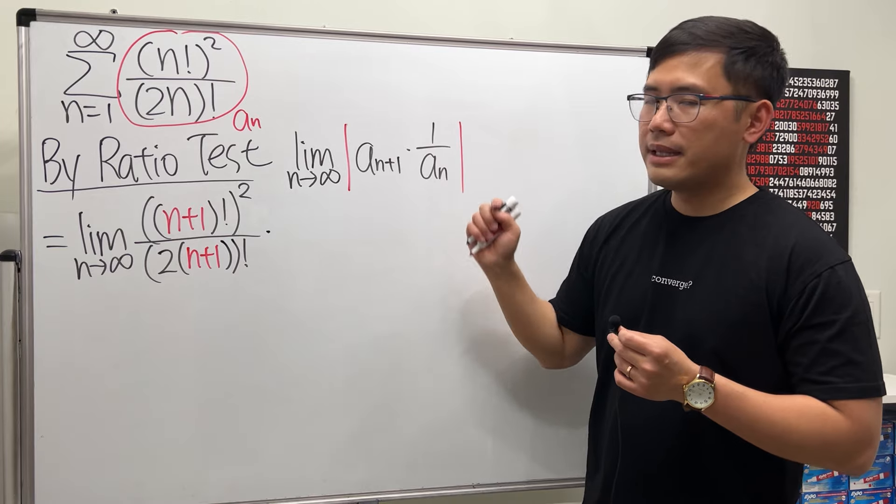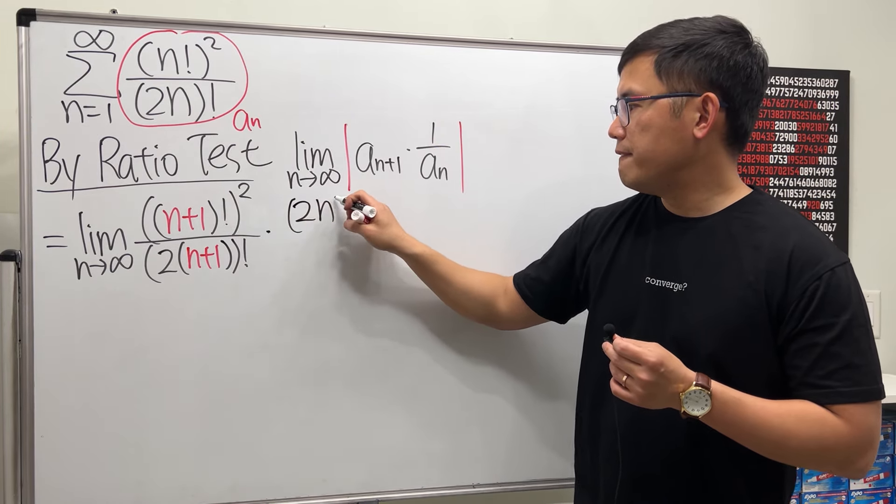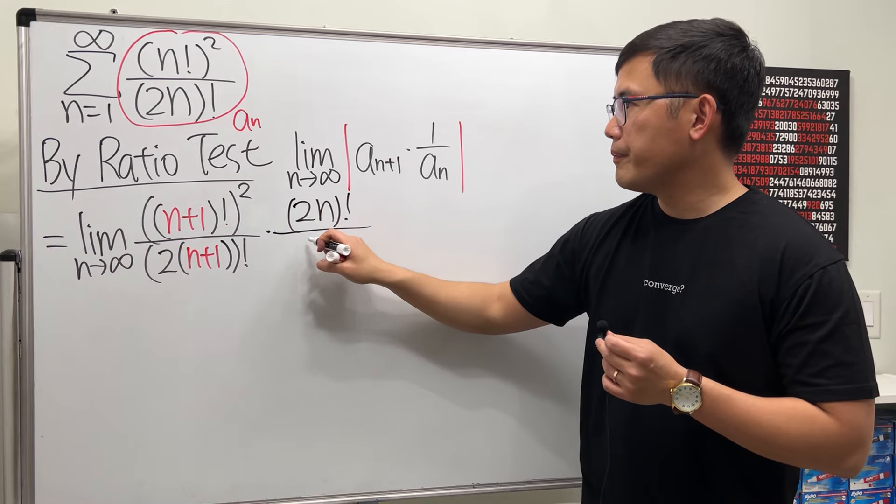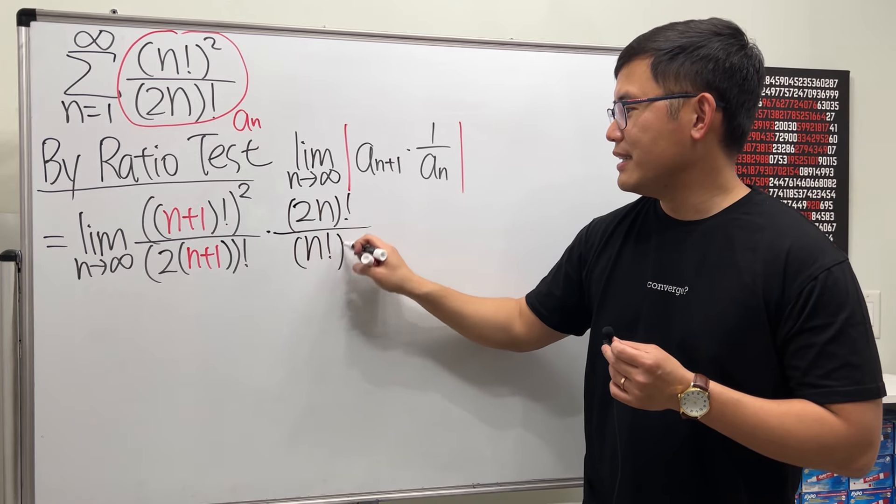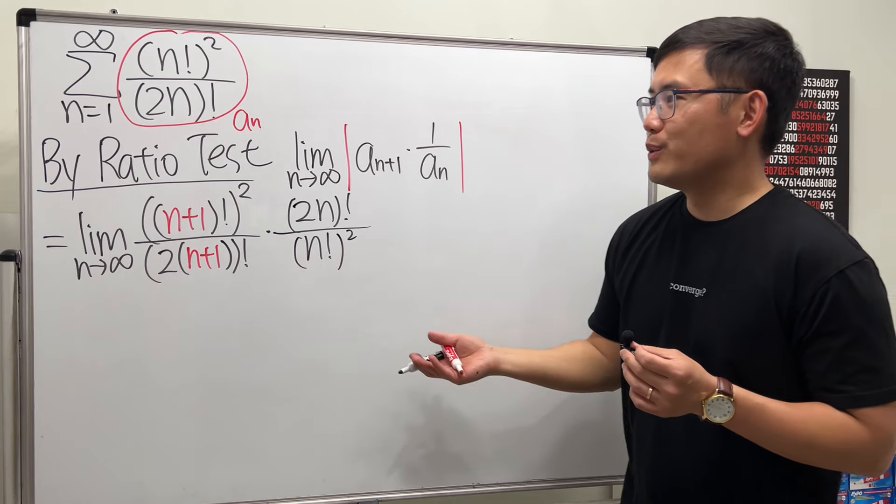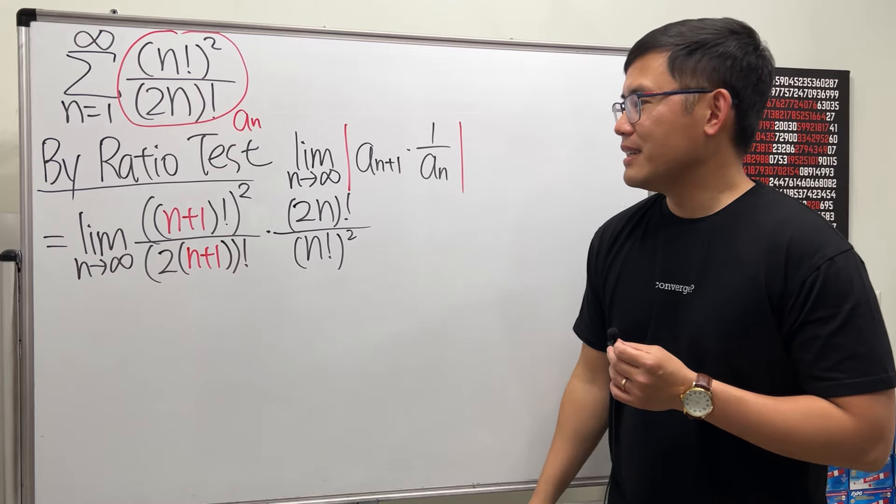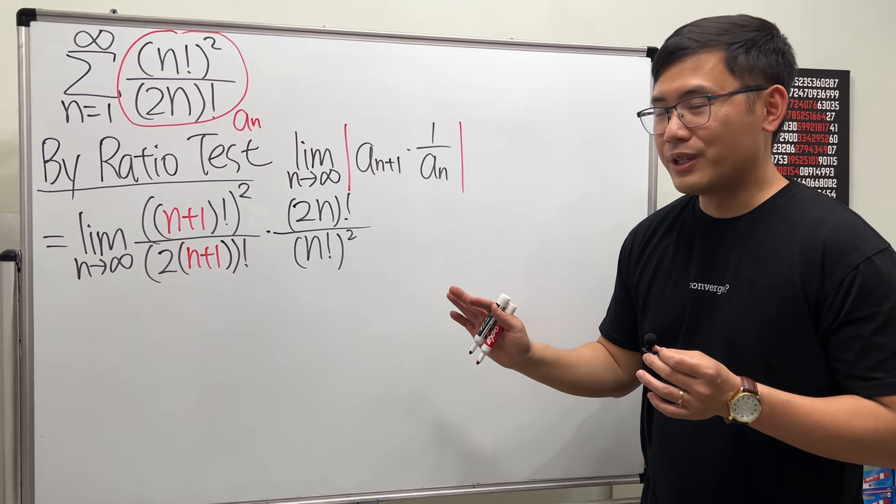Now multiply by the reciprocal of a_n, so just flip that: 2n factorial on the top over n factorial and then square that. And one of the things that people like about the ratio test is because of the cancellations—it's very satisfying, but we have to do it carefully though.